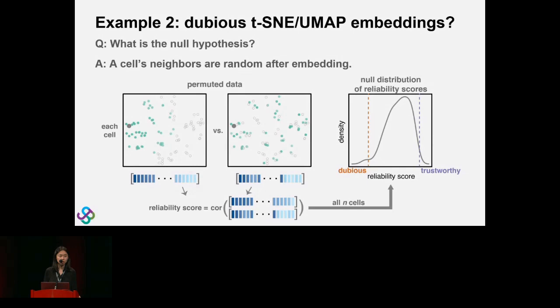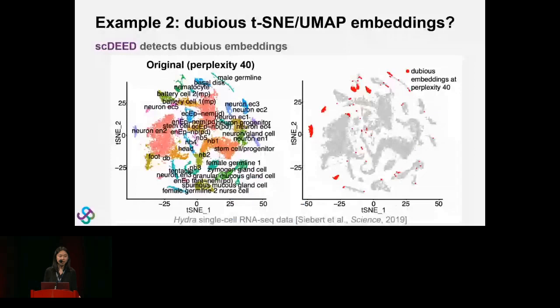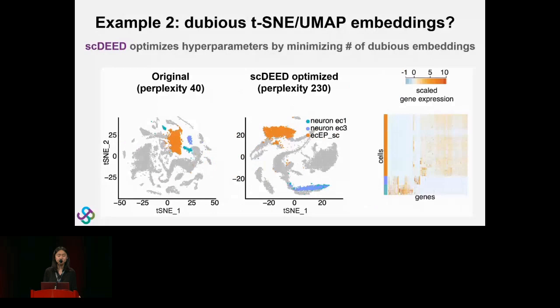Showing one result: the first single-cell RNA-seq dataset of Hydra — a freshwater species — from a 2019 Science paper. Running scDEED on this embedding, we find dubious cells in those small clusters, which is interesting because people may interpret those small clusters by assigning labels, but now we know they're dubious and their positions should be reassigned. We can also use scDEED with a grid of perplexity values for t-SNE to pick the perplexity that minimizes the number of dubious embeddings — we found perplexity 230, very different from the original default of 40.